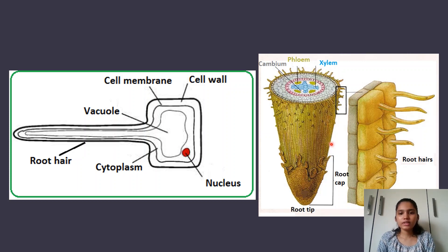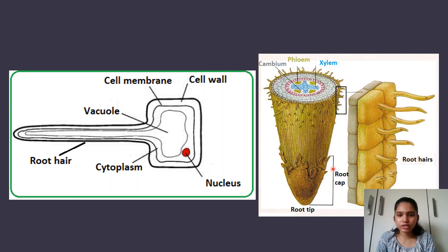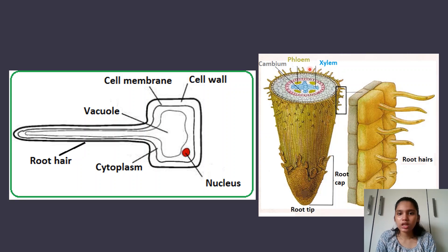Here is the outside view of a root. You can see the root cap, the root tip where more root hairs are being produced, and in the magnified version: the phloem on the outside, the xylem forming a cross in the center, the root cortex, and the epidermis on the outside.